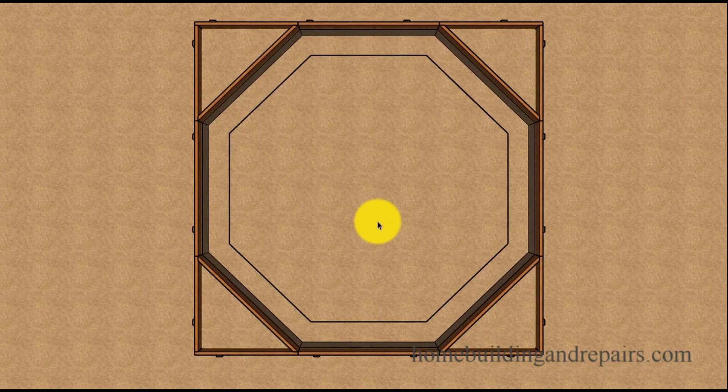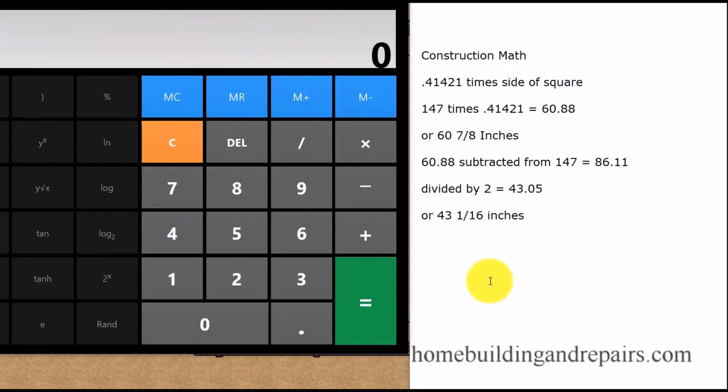That's it for this, I'm going to grab a calculator and start doing the math here. Let's get out our trusty computer calculator. Remember this is our magic number that's going to make everything easy, 0.41421, and this is the length of one side of the square that we are going to be using, 147 inches or 12 foot 3 inches.